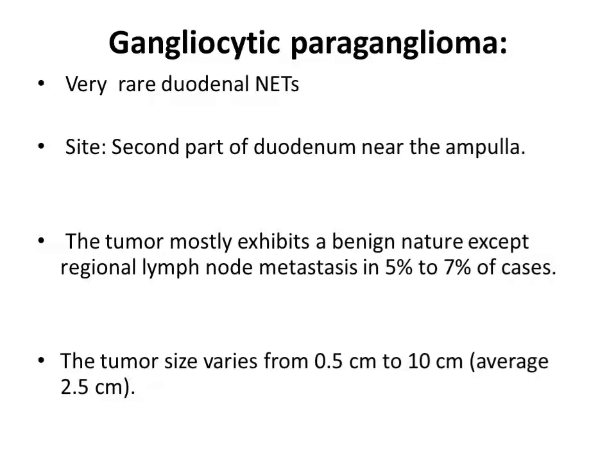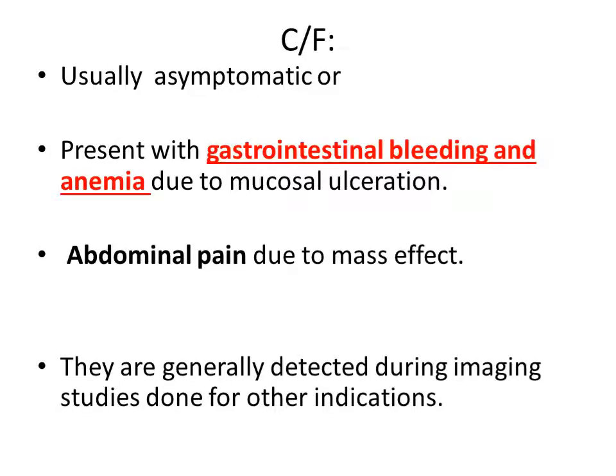Gangliocytic paraganglioma is a very rare duodenal NET. It is present on the second part of the duodenum near the ampulla. The tumors mostly exhibit a benign nature, except for occasional lymph node metastasis present in 5 to 7% of cases. Tumor size varies from 0.5 to 10 cm. Gastrinoma is a sub-centimeter multiple tumor originating from G cells in the submucosal layer of the proximal duodenum, accounting for about 10% of all DNETs.